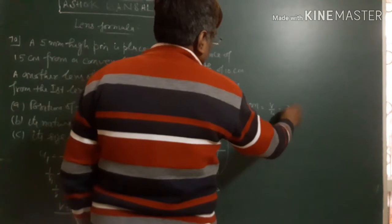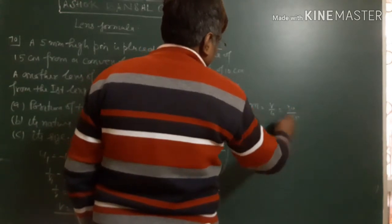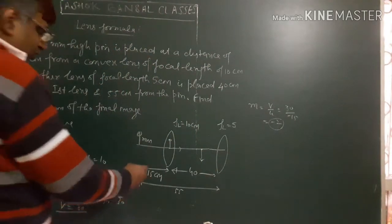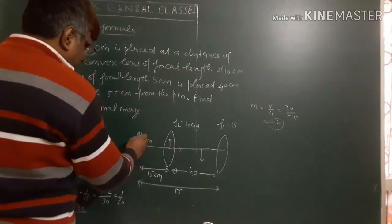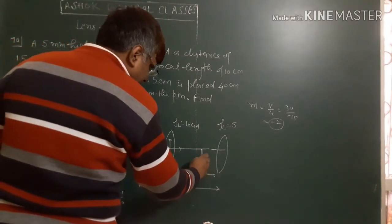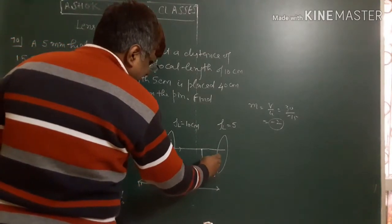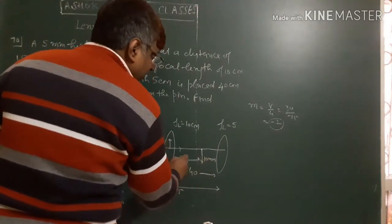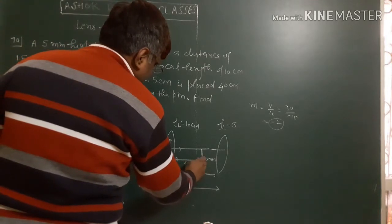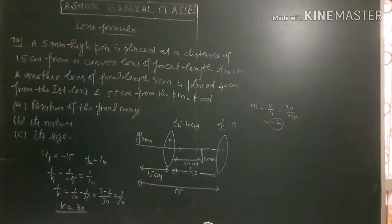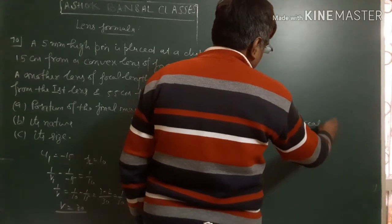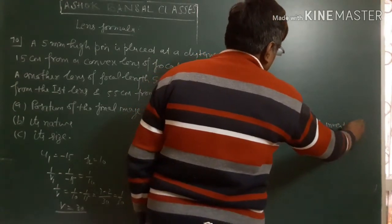Solving this gives v1 equals 30cm. The image is real, inverted, and at double distance.